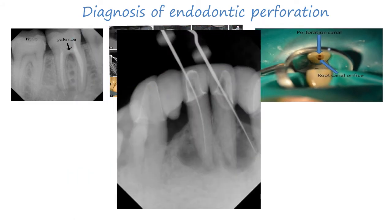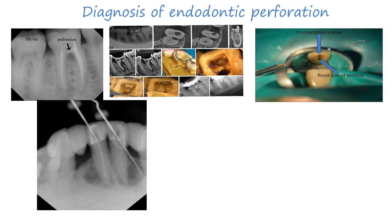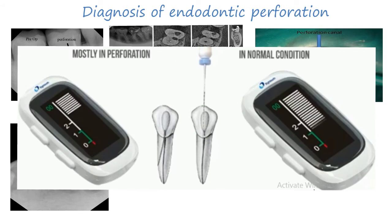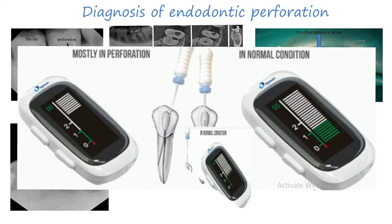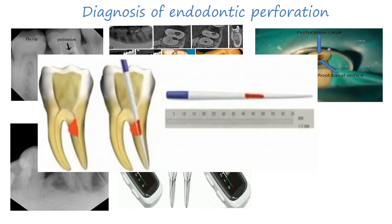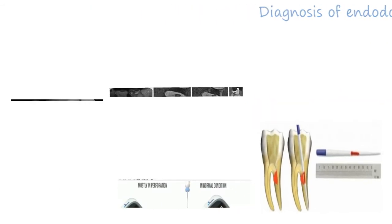Place a file or gutta-percha in the estimated perforation site and take a radiograph. Using an apex locator: in a normal canal without perforation, as you place a file and go deeper, there is a gradual decrease until you reach the apex. However, in cases of perforation, there is no gradual decrease — it suddenly reaches the apex. A bleeding spot on a paper point is also diagnostic, especially in stripping perforation.